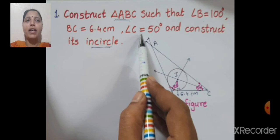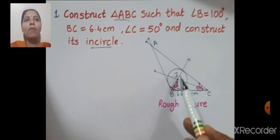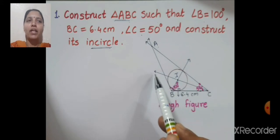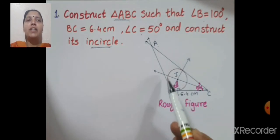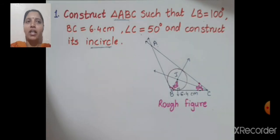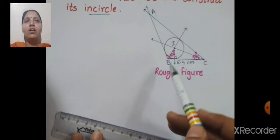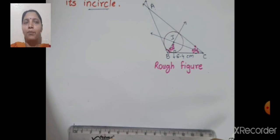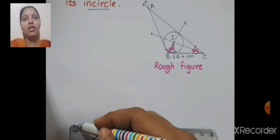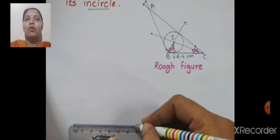Then draw angle B of 100 degrees and angle C of 50 degrees with approximate measurements. Then draw bisector of angle B and bisector of angle C. Whatever point of intersection you are getting, that point is known as the incenter of the triangle, denoted by I. Using center I and the perpendicular radius drawn from it, you have to draw the incircle. Now for the construction, draw segment BC of 6.4 cm with the help of a scale.